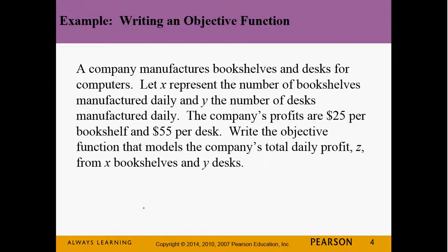So if Z is the total profit, what's the objective function going to be? How do I write the amount of profit if X is how many bookshelves we make and Y is how many desks we make? We're going to multiply 25 times however many bookshelves we make, 55 times however many desks we make, and add them together. So Z = 25x + 55y.